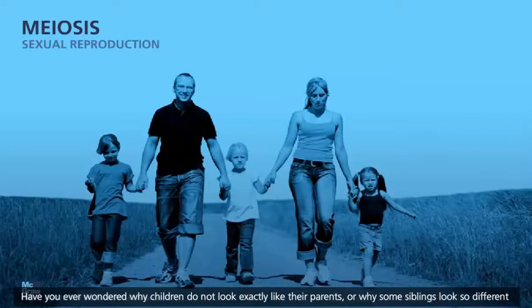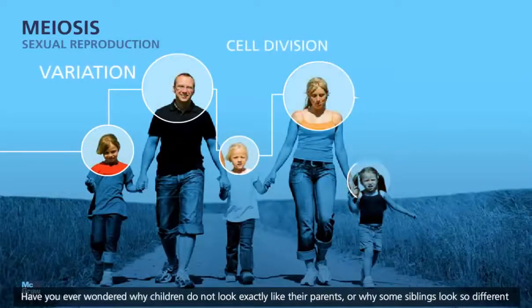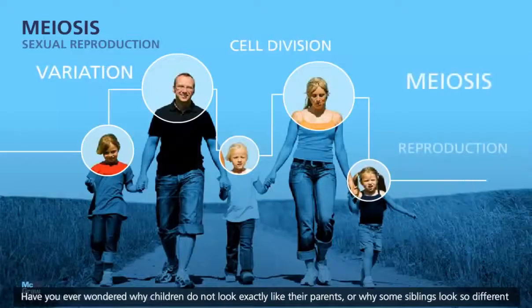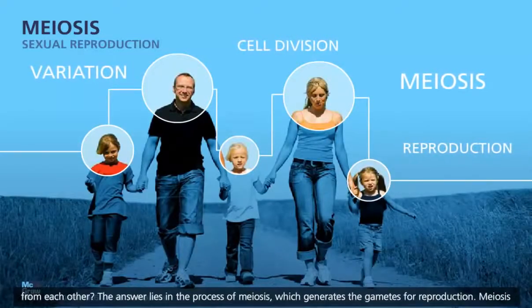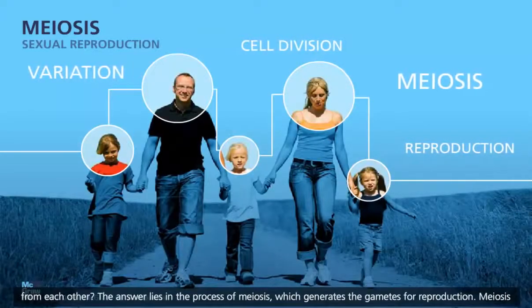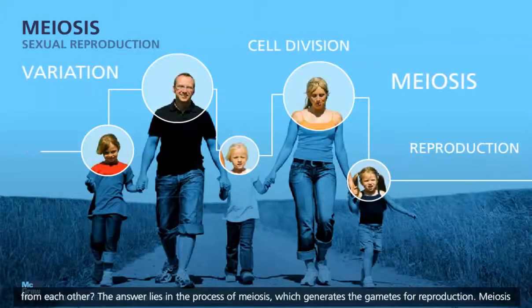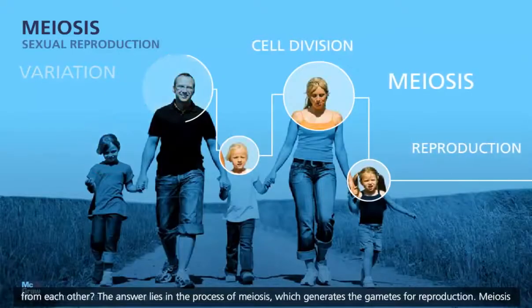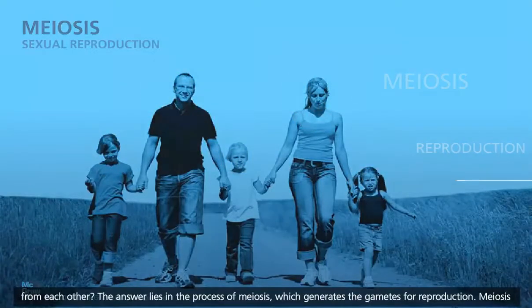Have you ever wondered why children do not look exactly like their parents, or why some siblings look so different from each other? The answer lies in the process of meiosis, which generates the gametes for reproduction.